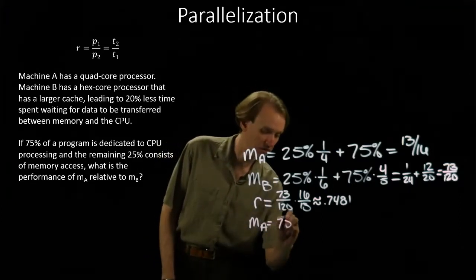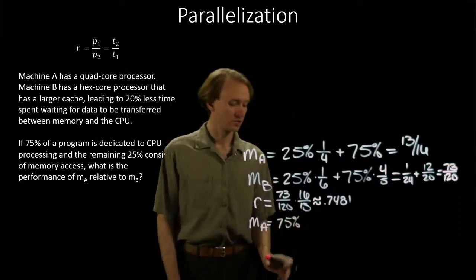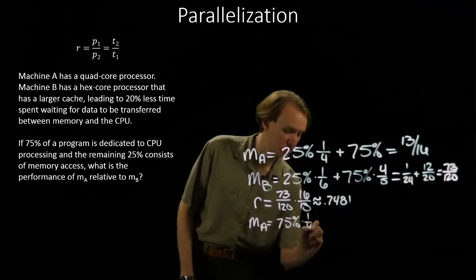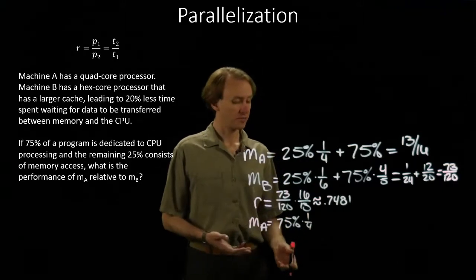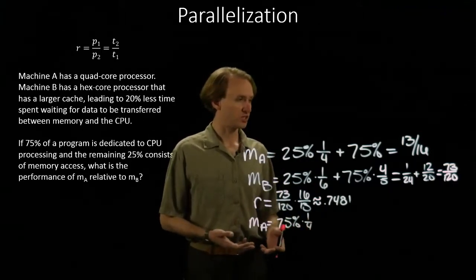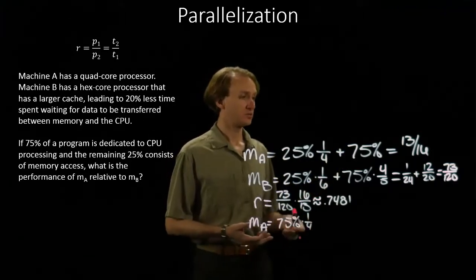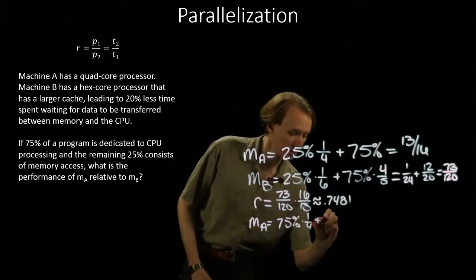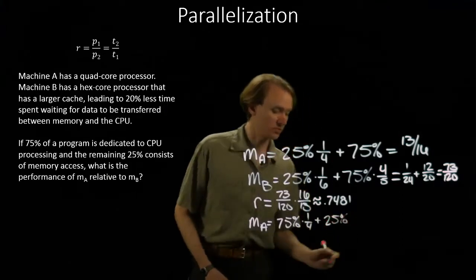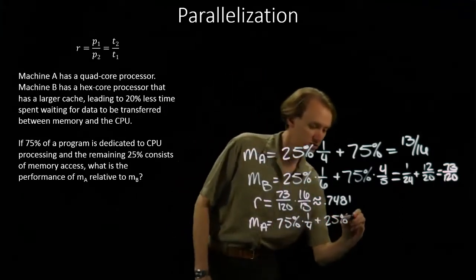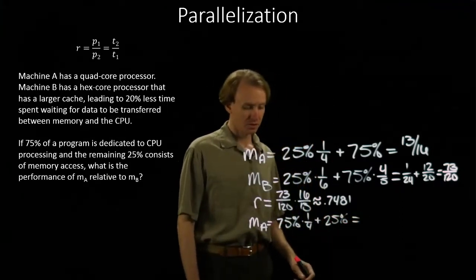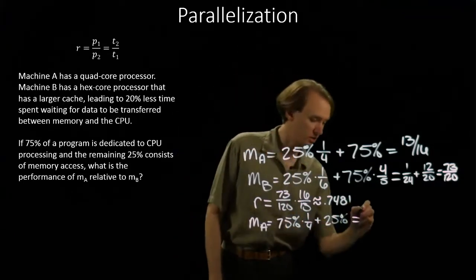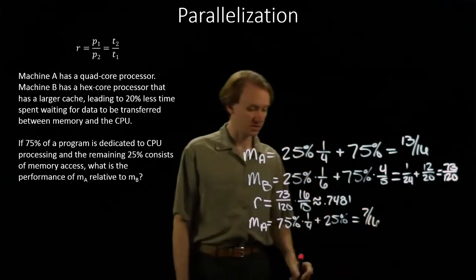So this time I have seventy-five percent of my instructions are CPU instructions, and machine A already runs those in parallel. So they take about one-fourth as much time as a single memory instruction does for machine A. And the other twenty-five percent of my instructions here are memory instructions. So I've got three-sixteenths and one-fourth, which gives me seven-sixteenths.